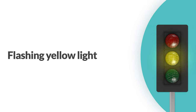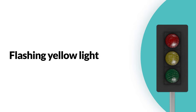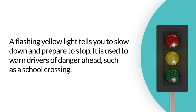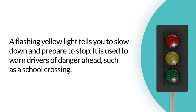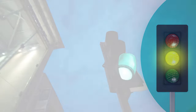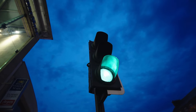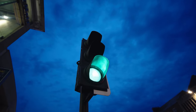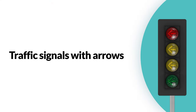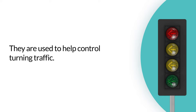A flashing yellow light tells you to slow down and prepare to stop. It is used to warn drivers of danger ahead, such as a school crossing. Remember to yield to any vehicles and pedestrians in the intersection.